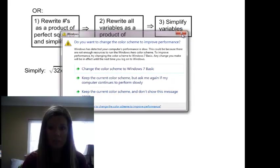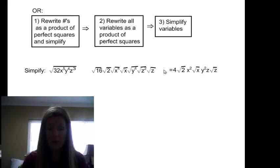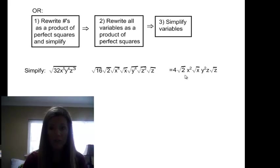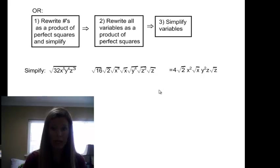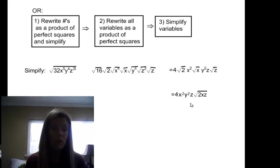Working through the simplification: the square root of 16 becomes 4, and the square root of 2 stays. For x to the fourth — since the index is 2, how many groups of 2 are in x to the fourth? There are 2 groups, giving x squared, and the remaining x stays under the radical. Y to the fourth gives 2 groups of 2, which is y squared with nothing left over. Z squared gives 1 group of 2, which is z, and the remaining z stays under the radical. Collecting terms, notice we get the same answer regardless of which method we choose.